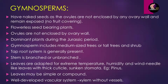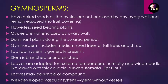Since there is no fruit covering around the ovules, they have naked seeds. Gymnosperms do not bear any kind of flowers, so they are also called flowerless plants. The ovules are not enclosed by the ovary wall. These gymnosperms were very dominating during the Jurassic period of the dinosaurs.